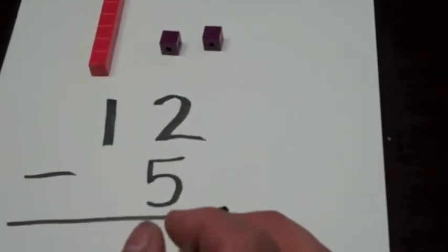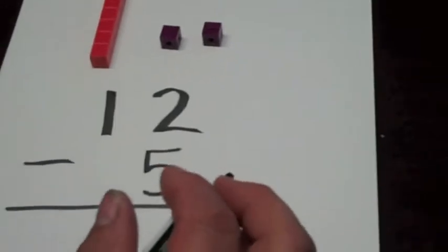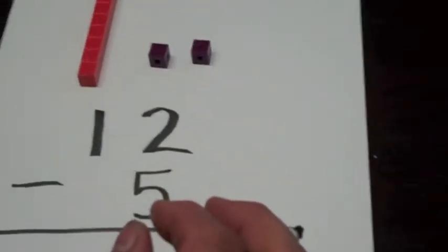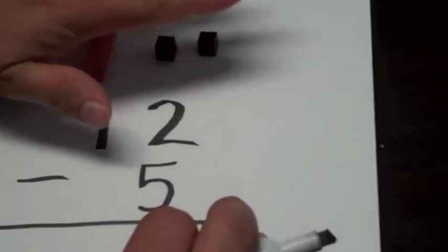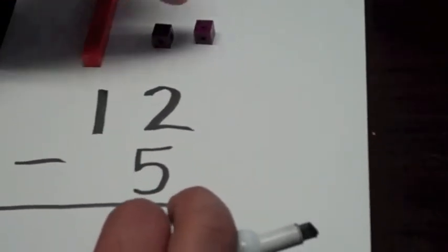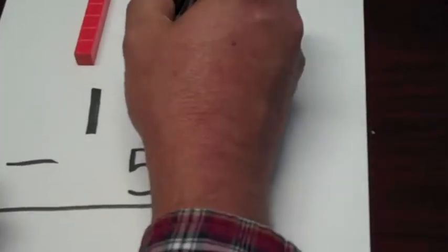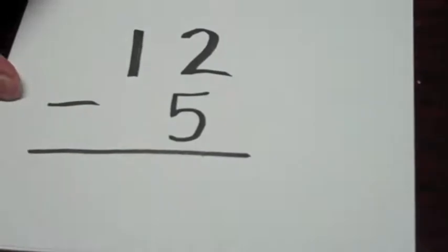Now I'm going to do the same problem, but instead of using concrete materials, I'm going to use semi-concrete diagrams. I'm going to represent these two units with two dots, and this ten-stick with a picture of a ten-stick.